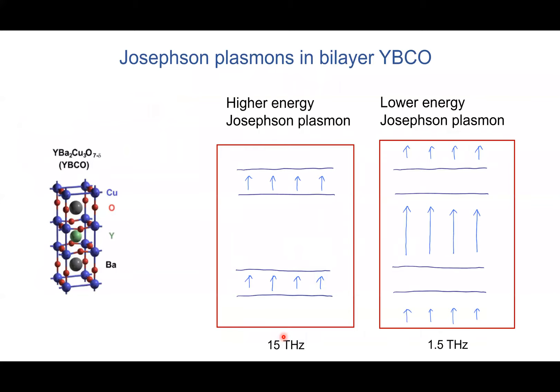One can write fairly simple equations of motion — basically a continuity equation for the charge, a Josephson equation relating the time derivative of the phase and chemical potential — and one can show there is a simple equation for the relative phase which looks exactly like an equation for the physical pendulum. This gives us a characteristic frequency proportional to the square root of the Josephson coupling; this excitation is what's called the Josephson plasmon. In a three-dimensional structure consisting of stacked layers — such as in YBCO, which is a bilayer system — we get a plasmon at higher frequency within the bilayer due to stronger coupling, and a lower-frequency Josephson plasmon between the bilayers.